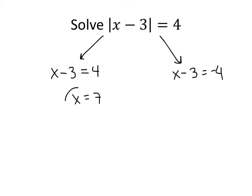If I add 3 to both sides, I get x equals 7. And here if I add 3 to both sides, I get x equals negative 1. So as long as you remember that absolute values give us these two possibilities, you'll be okay.